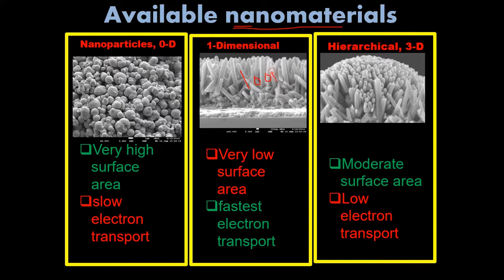Sometimes people say that when the dimension is below 1000 nanometers, we call it a nanostructure material. If at least one dimension — whether one dimension, two dimension, or three dimension — is in this range of below 100 nanometers or 1000 nanometers, we call that a nanostructure material.